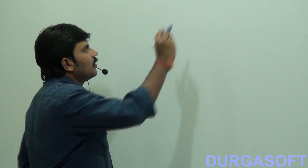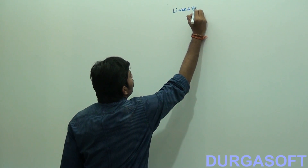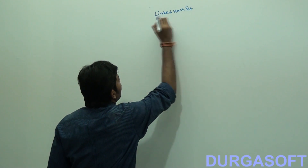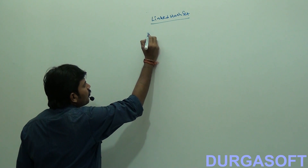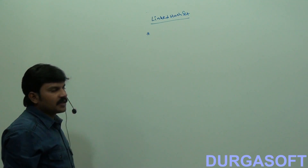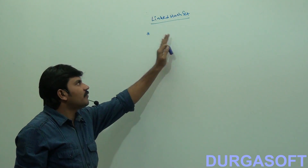So up to this we covered what is HashSet and its various properties. Now the next implementation class of the Set interface we have to discuss is LinkedHashSet. The first point about LinkedHashSet is that it is a child class of HashSet.